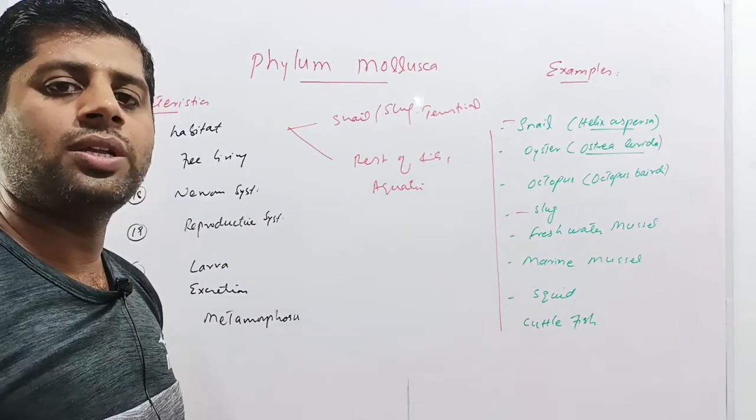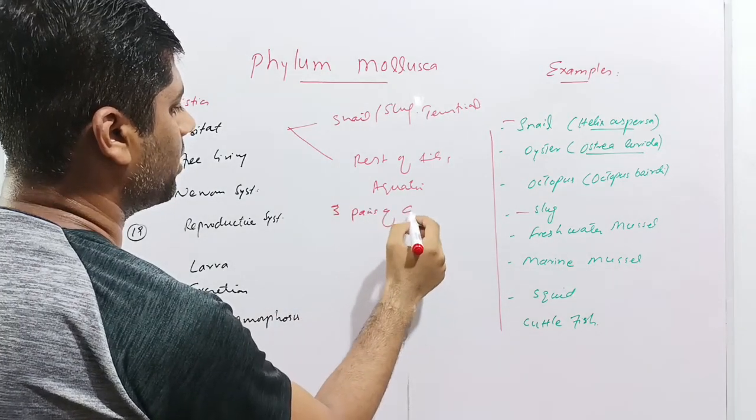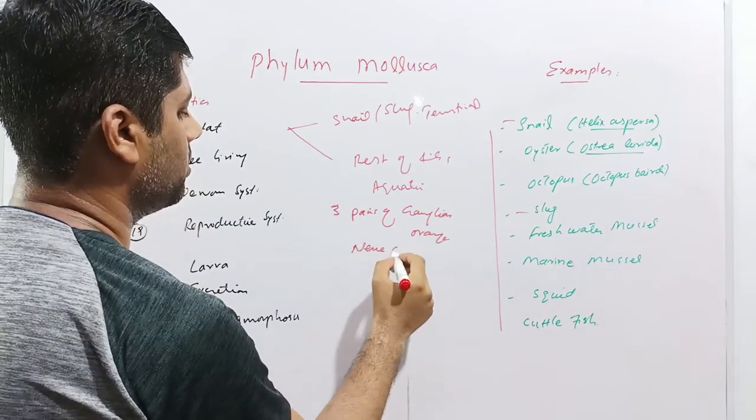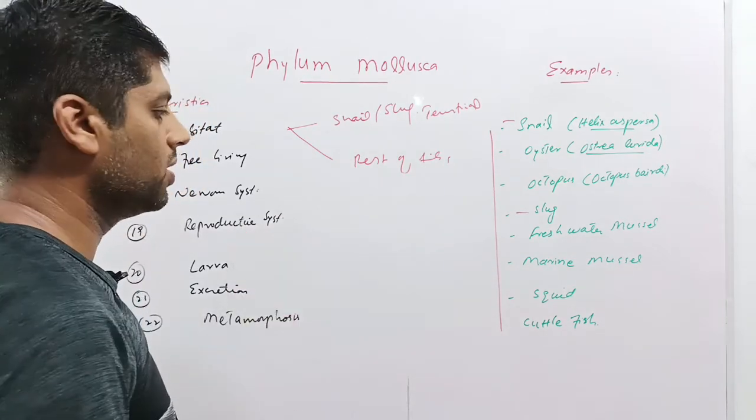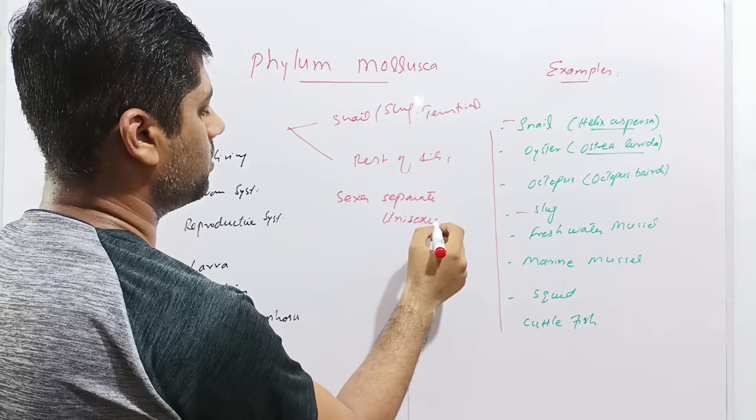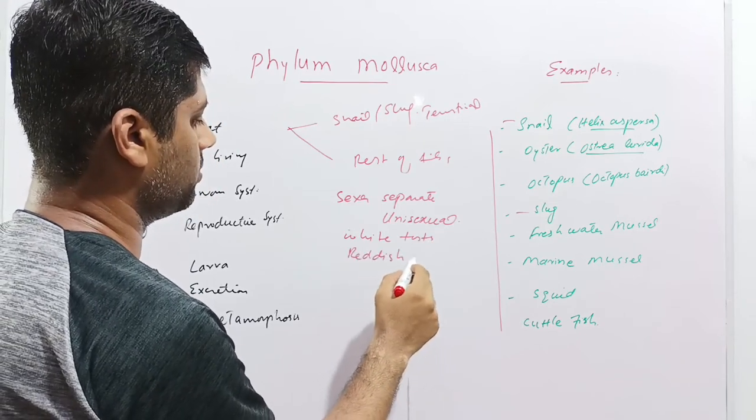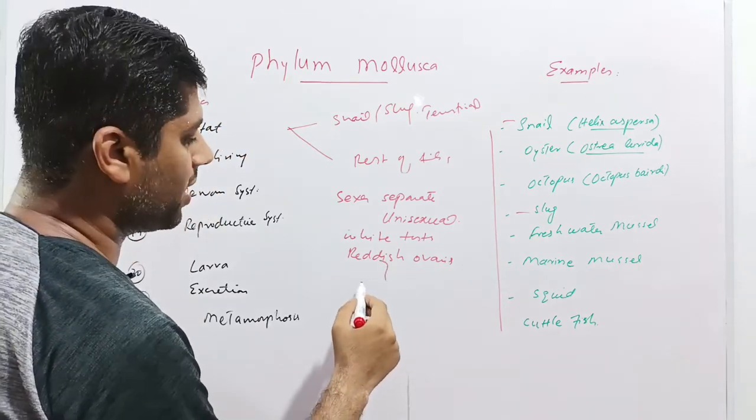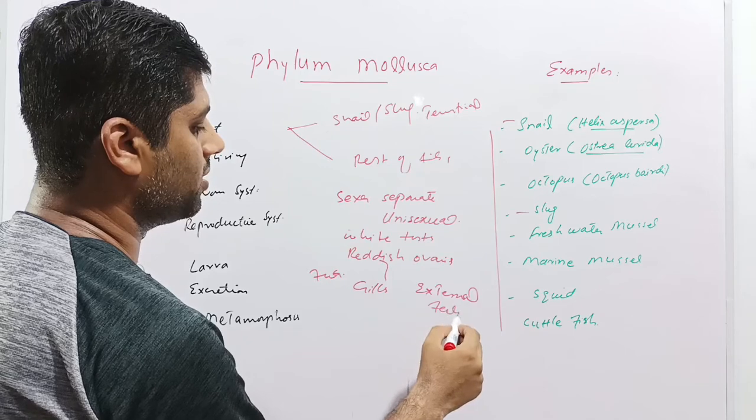These are all free living animals without any parasitic member. The nervous system comprises three pairs of ganglia. These are interconnected ganglia which are interconnected by nerve cords. These ganglia send nerve cords to whole body parts for the coordination and control of the body. Next is the reproductive system. Sexes are separate. We can say that these are unisexual animals. Males have white testes while females have reddish ovaries. Female is oviparous, lays eggs. And then these eggs are fertilized in the gills. Fertilization occurs in the gills. We can say the fertilization is external because it takes place in the gills.